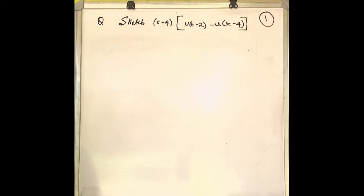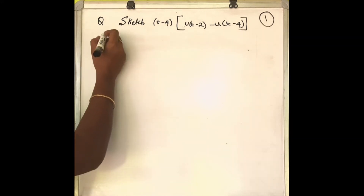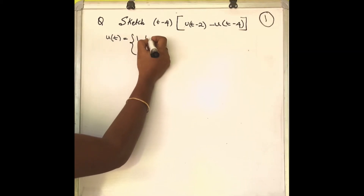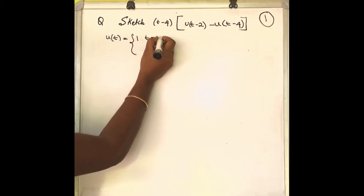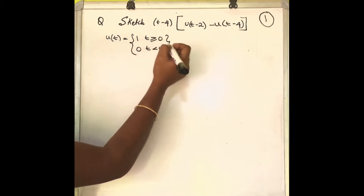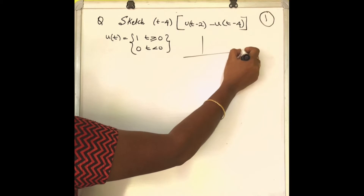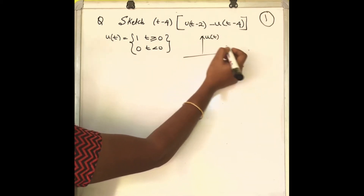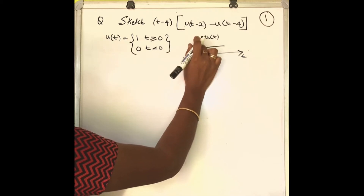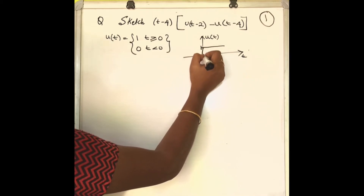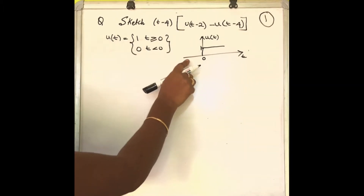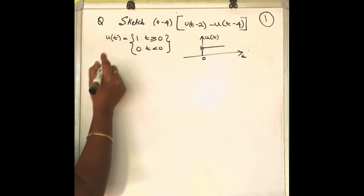First, recall that u(t), the unit step function, is 1 for t greater than or equal to 0, and 0 when t is less than 0. Please draw the graphical representation of u(t) — it is 1 for t equal to 0 and beyond. This is u(t).